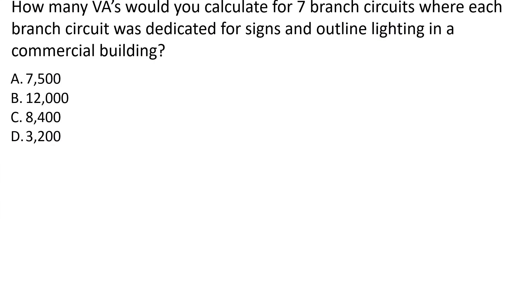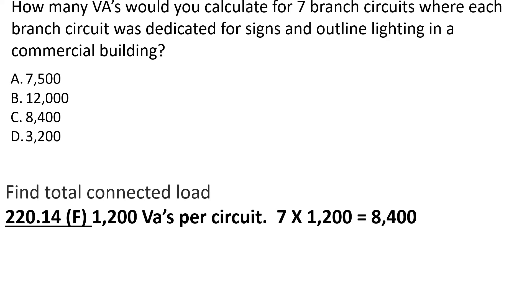How many VAs would you calculate for seven branch circuits where each branch circuit was dedicated for signs and outline lighting in a commercial building? Step one: find our total connected load. For this, we're going to go to 220.14F, and it lets us know that for each circuit it's going to be 1,200 VAs per circuit. We have seven circuits multiplied by 1,200, which equals 8,400 VAs.